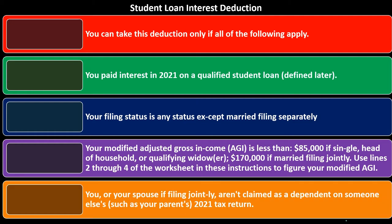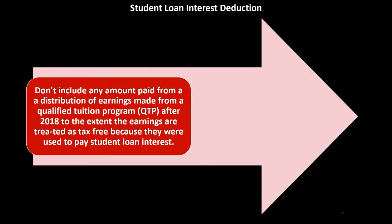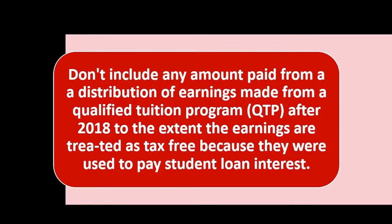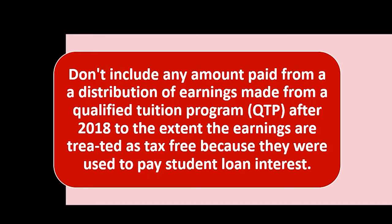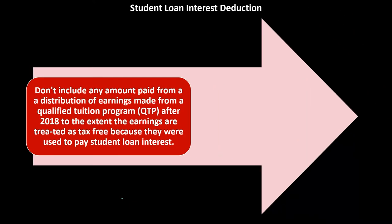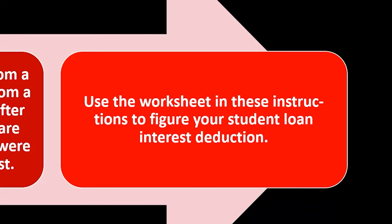You or your spouse, if filing jointly, can't be claimed as a dependent on someone else's return — such as your parents' 2021 return. Also, don't include any amount paid from a distribution of earnings from a qualified tuition program (QTP) after 2018, to the extent those earnings are treated as tax-free because they were used to pay student loan interest. Use the worksheet in the instructions to figure your deduction.